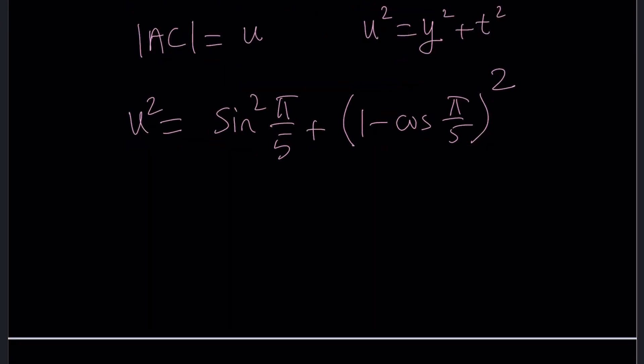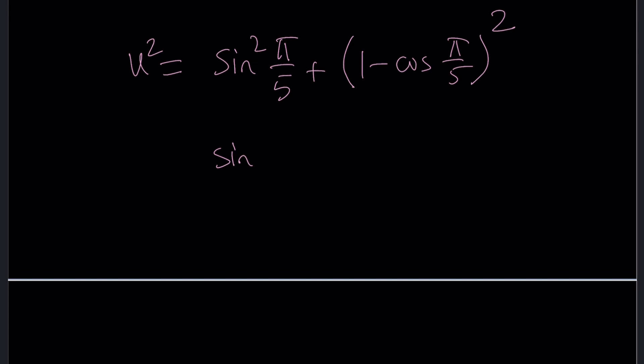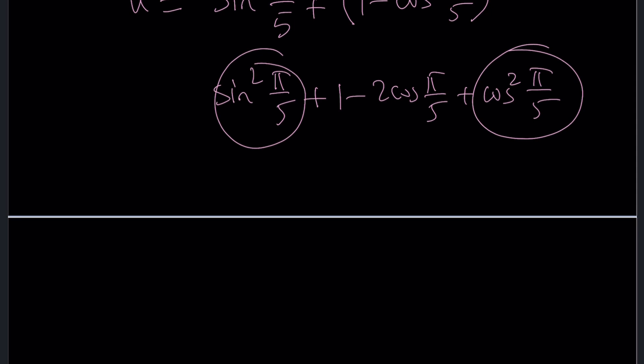Now where do we go from here? We can kind of expand it. Let's do it. sin²(π/5) + 1 - 2cos(π/5) + cos²(π/5). Notice that this plus this is equal to 1 because sin² + cos² is always 1. 1 + 1 is equal to 2. This will be 2 - 2 times cos(π/5).